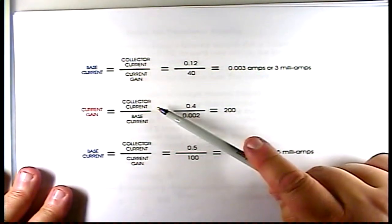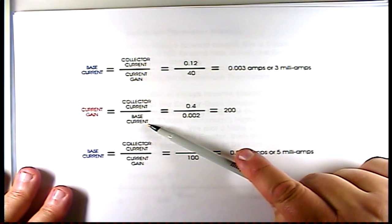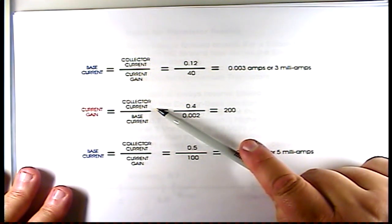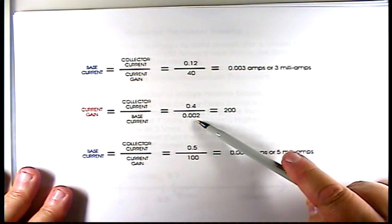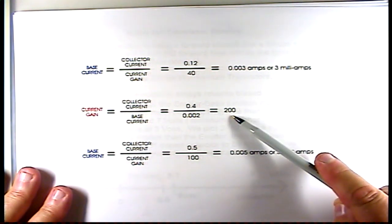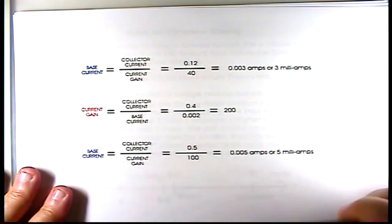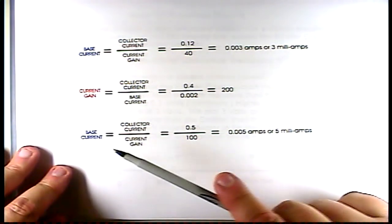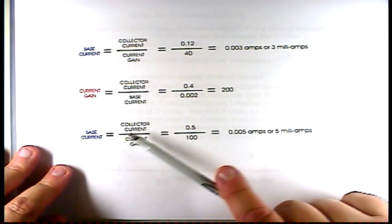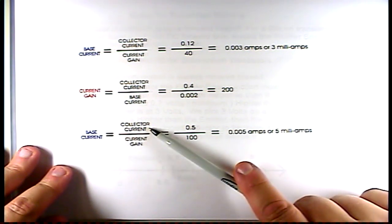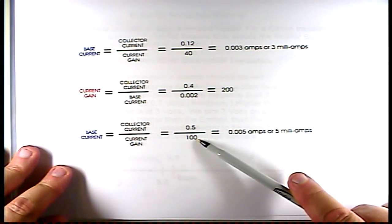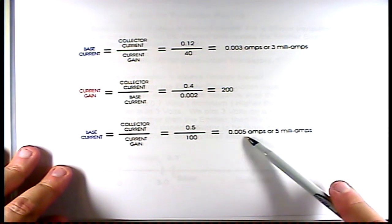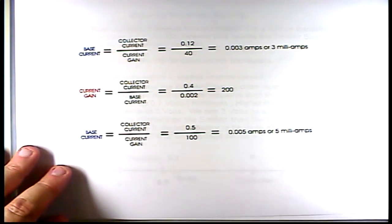Here we want to find the current gain, and that would be the collector current over the base current. Collector current in this case would be 0.4, and base current would be 0.002, and therefore the current gain in this particular transistor is 200. Up here, we want to find base current. We know our collector current and our current gain. Collector current is 0.5 and the current gain is 100, so it's 0.005, or 5 milliamps.